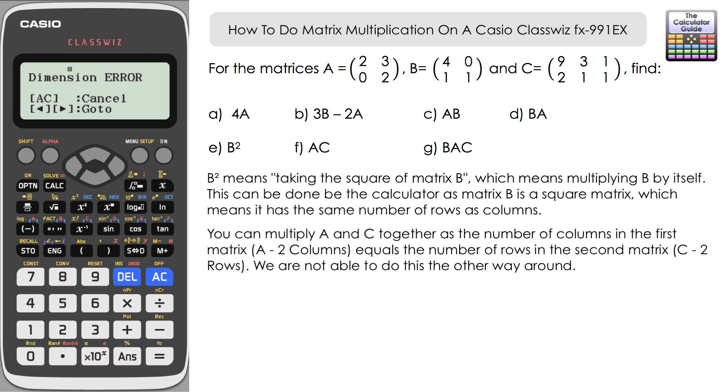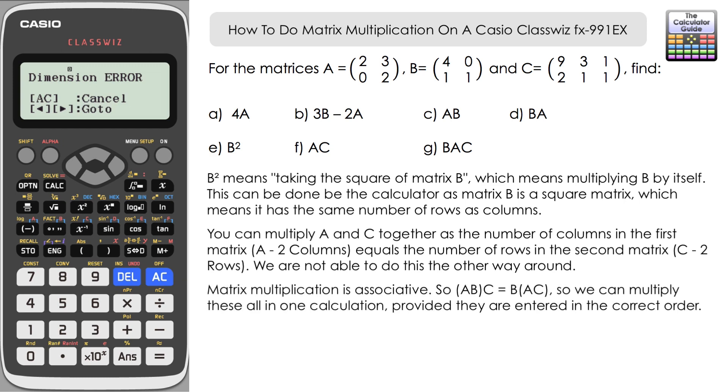But we can do part G, which is BAC, essentially due to C being the last in the three matrices that we're multiplying together here. So B, A, C, C is last. So we're able to do that multiplication.